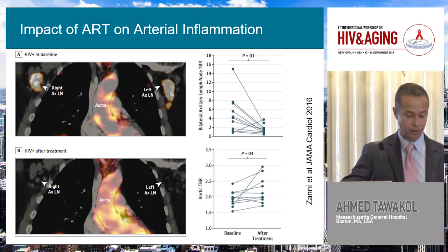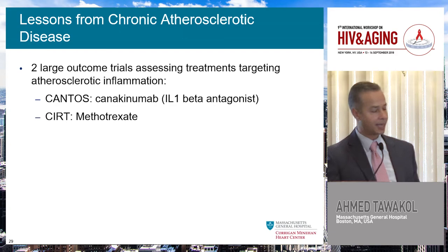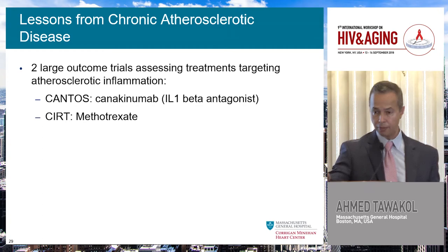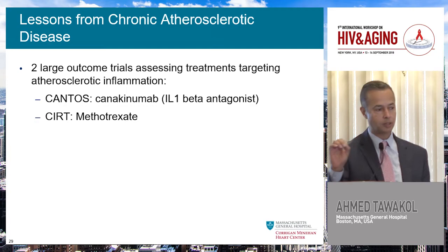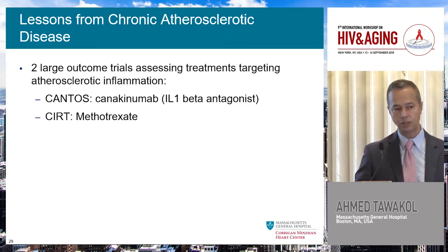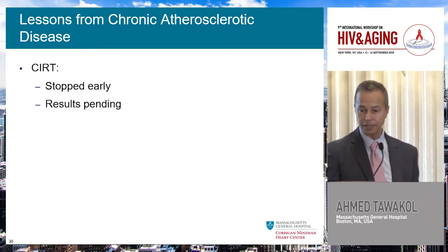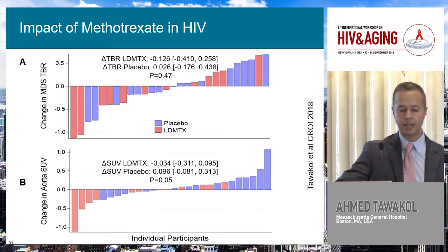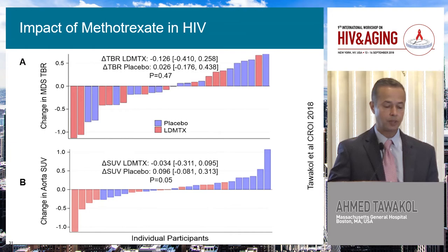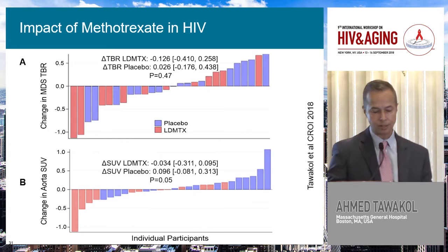What might work? Let's get lessons from chronic atherosclerotic disease. Currently, there are two big trials looking at anti-inflammatory approaches in patients with chronic atherosclerosis — though those trials excluded individuals with chronic inflammatory conditions including HIV. There is CANTOS, which looked at canakinumab, an IL-1 beta antagonist, and CIRT, looking at low-dose methotrexate. CIRT was stopped early, results still pending. But we already have insights from the ACTG A5314 study, which looked at the impact of methotrexate on arterial inflammation in patients living with HIV.